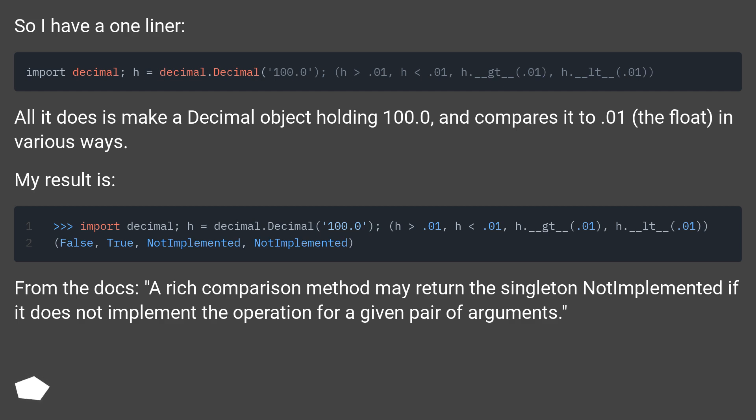From the docs, a rich comparison method may return the singleton NotImplemented if it does not implement the operation for a given pair of arguments.